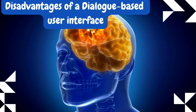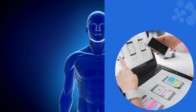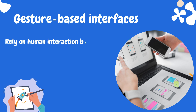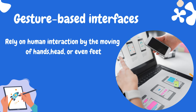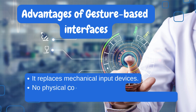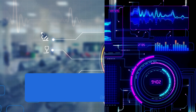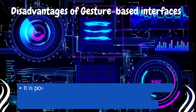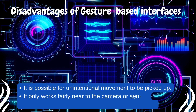The fourth type of user interface is the Gesture-Based Interface, which relies on human interaction by the moving of hands, head, or even feet. An example is rotating a finger clockwise near a radio to increase its volume. Advantages: 1. It replaces mechanical input devices. 2. No physical contact is required. 3. It is a very natural interface for a human operator. Disadvantages: 1. It is possible for unintentional movement to be picked up. 2. It only works fairly near to the camera or sensor. 3. It may only accept a limited number of movements.